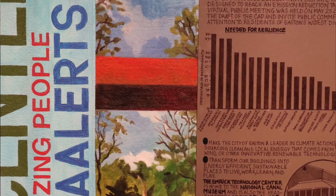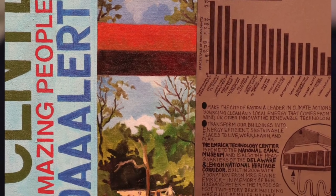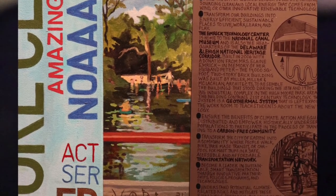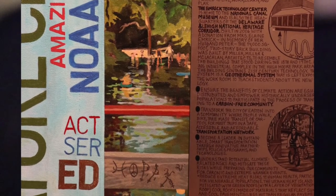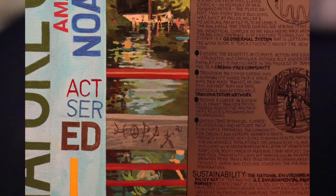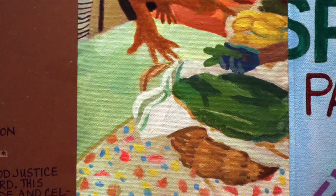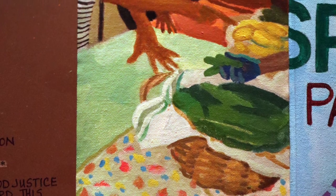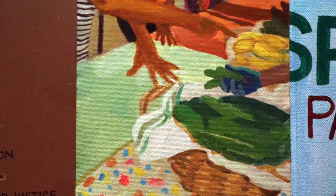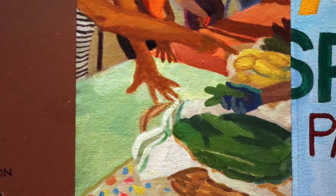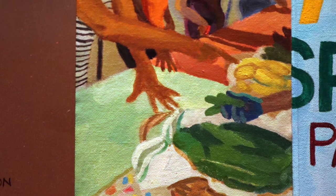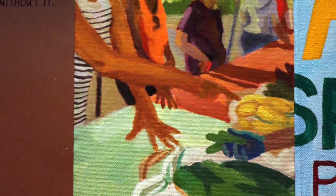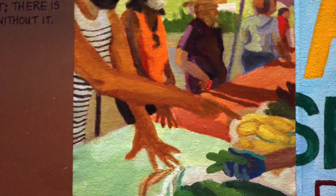Of course, I have a painting of the Nurture Nature Center because they're an important part of Easton. And the new bridge that goes from the Carl Sterner Arts Trail over to the Silk Mill, where kids were playing. The last panel has to do with food, and that food distribution is a collaboration between the university and the Westward Partnership Program — that's how it got started.